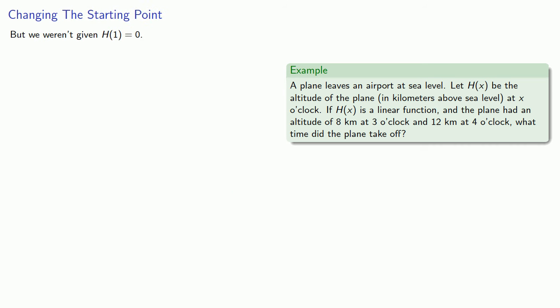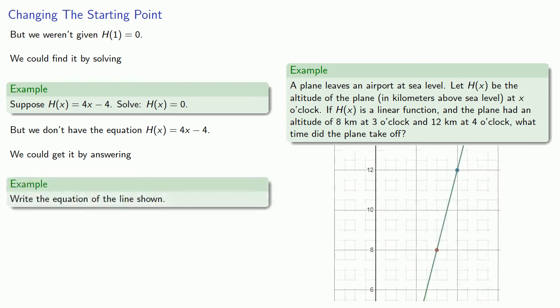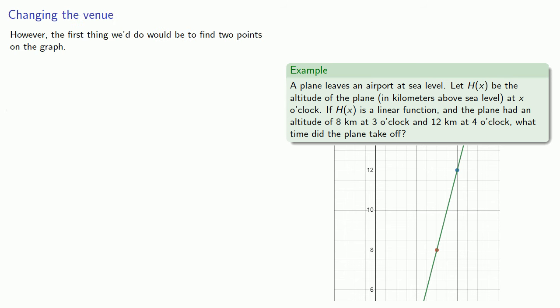That's the end point of the exam. Of course, we weren't actually given h of 1 equals 0, and that's because the starting point was also changed. We can find this by solving the equation, but we don't actually have that equation. We can get it by answering this question, but we weren't given the graph. However the first thing we do to find the equation is to find two points on the graph, and we're given two points on the graph.